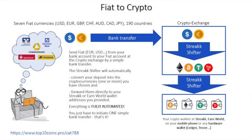Make the bank transfer. The Streak Shifter will take it from there and convert your money into cryptocurrencies and send them to your wallet addresses. You can use one of seven fiat currencies like US dollar, euros, British pound, Swiss franc, Australian dollars, Canadian dollars, or even Japanese yen. If you make a real-time transfer at your bank, the amount will be available within a few minutes and the cryptos will be on their way to the destination address.